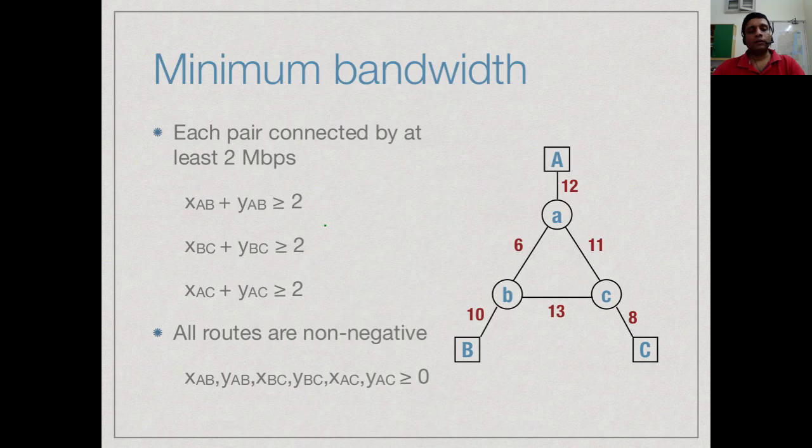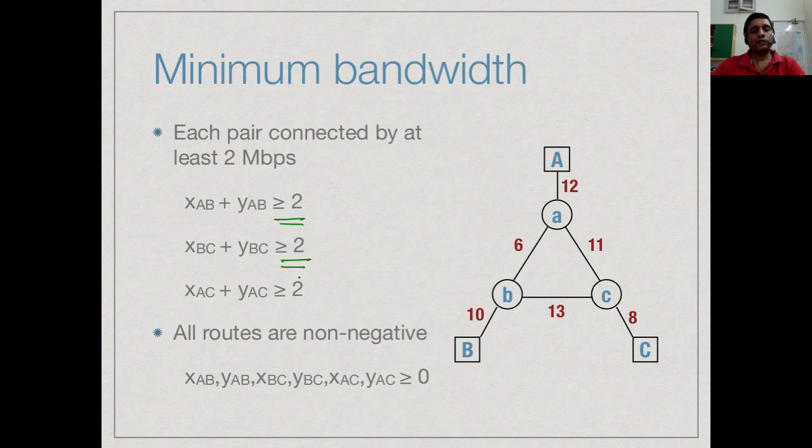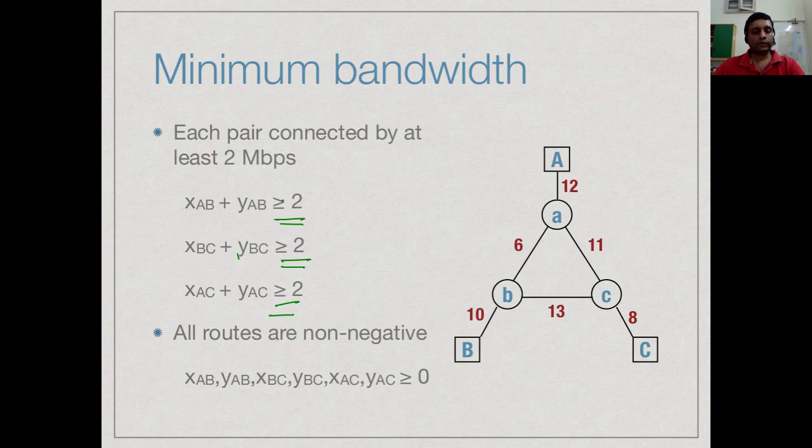Finally, we have this minimum requirement that between A and B, we must supply at least 2, between B and C, we must supply at least 2 and between A and C, we must supply at least 2 and these are the sums of the direct and indirect. We do not distinguish between them and of course, every capacity must be non-negative.